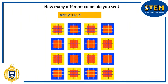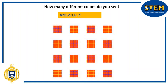In this next illusion, we are asked how many different colors we can see. Your first response might be four. The smaller squares inside the blue and yellow squares are actually the same color though. They seem different — something like magenta and orange — because color is perceived differently depending on its relation to adjacent colors. So there are actually only three colors: blue, yellow, and orange.